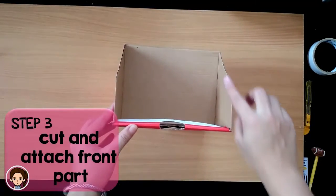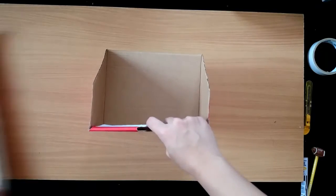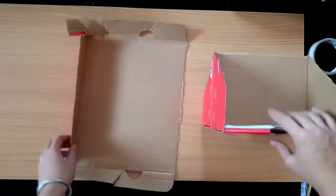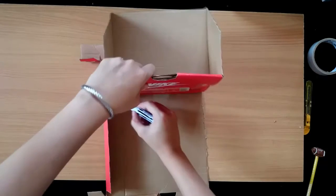Step 3: Cut and attach the front part of your organizer. Using the cover of the shoebox, trace the rectangle and cut it.